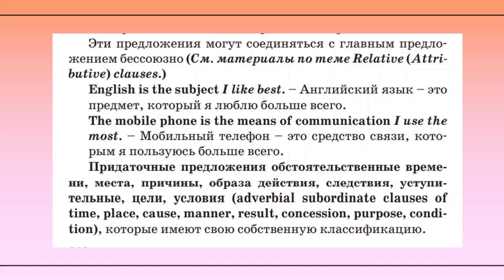Придаточные обстоятельственные бывают следующих видов: времени, места, причины, образа действия, следствия, уступительные, цели, условия — то есть subordinate clauses of time, place, cause, manner, result, concession, purpose, condition — и они имеют свою собственную классификацию.